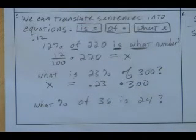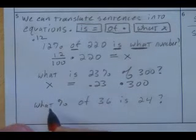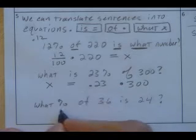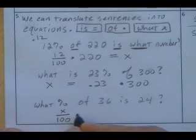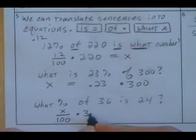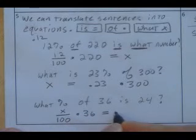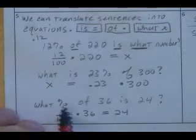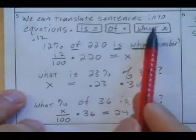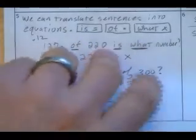Now this one's saying what percent of 36 is 24. So what divided by 100? What percent of 36 is 24? Solve for x. Multiply by the LCD, multiply both sides by 100, divide by 36, and you'll find what that x is. So this is how you do it. What, of, is. Let's do one.